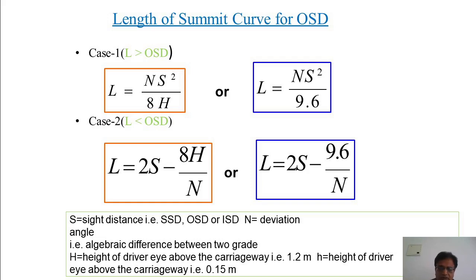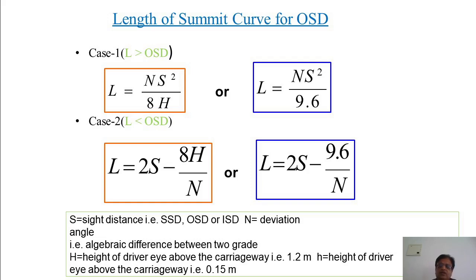Coming to the notations: S is the sight distance, either SSD or OSD. N is the deviation angle, that is the algebraic difference of the two grades — one may be ascending and another descending. Capital H is the height of the driver's eye above the carriageway, which is 1.2 m, and small h is the height of the object above the carriageway, which is 0.15 m.